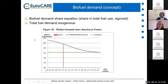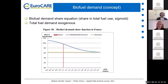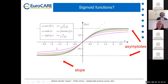We have a function implemented in the model which basically sets the share according to the relative prices. If the price of biofuels is relatively higher compared to fossil fuels, then it will get a higher share, and vice versa. Mathematically, we are using a sigmoid function.